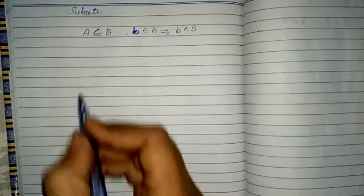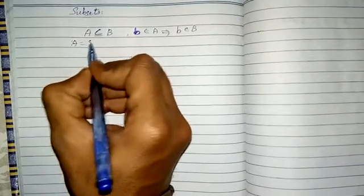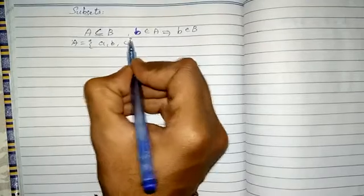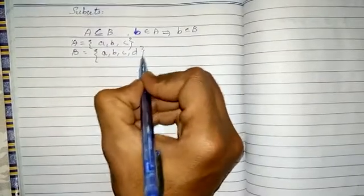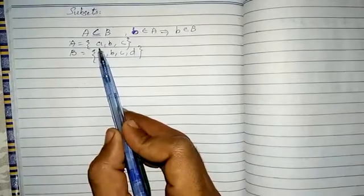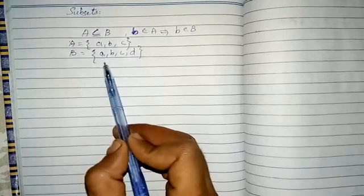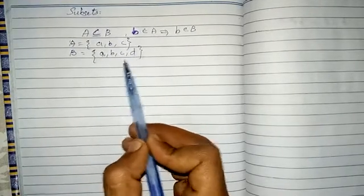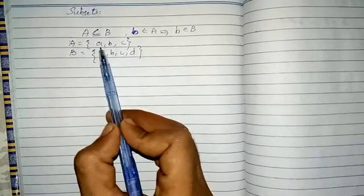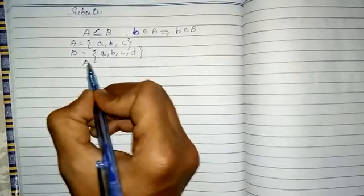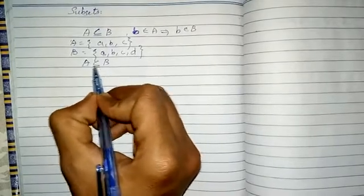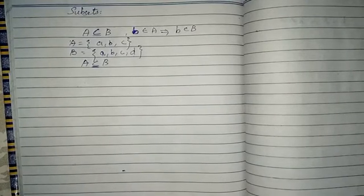Let us take a few examples. Set A is {a, b, c} and set B is {a, b, c, d}. Set A contains three elements a, b, c while set B contains four elements a, b, c, and d. We can see that all elements of set A are available in set B, so this is represented symbolically as A is the subset of B.